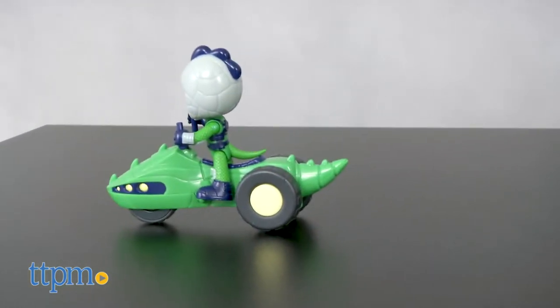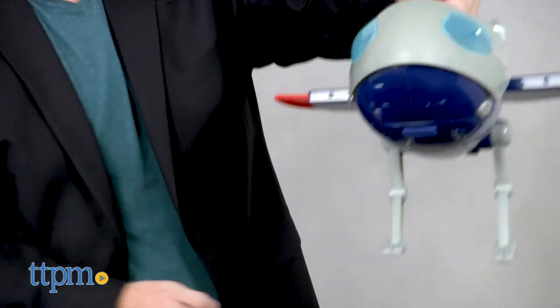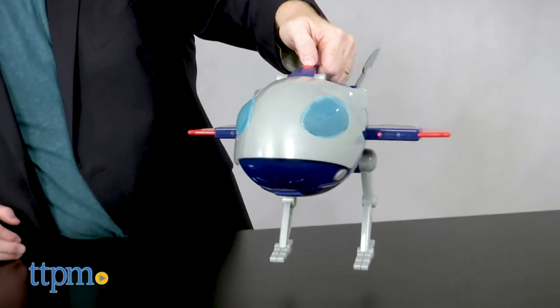The HQ requires two AAA batteries but they are included. For ages three and up, young PJ Masks fans will love imagining missions for this awesome spaceship and its crew.